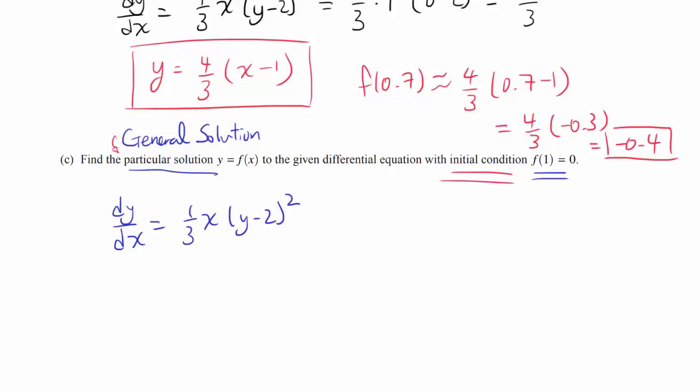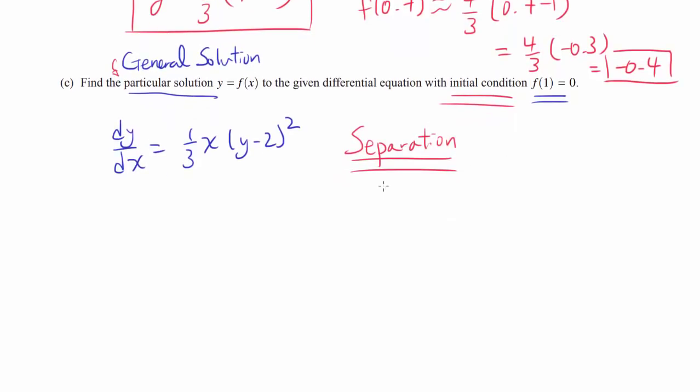So how do you find the general solution to this differential equation? Well, we have x and y multiplied on one side and we have dy/dx. So separation seems like the way to go. Separation, in calculus AB or BC really, is as hard as it's going to get. So you can always rely on separation or direct integration. So using separation, we move every y to one side with dy and every x to one side along with dx. So we have 1/(y-2)² dy and (1/3)x dx. Integrate both of them.